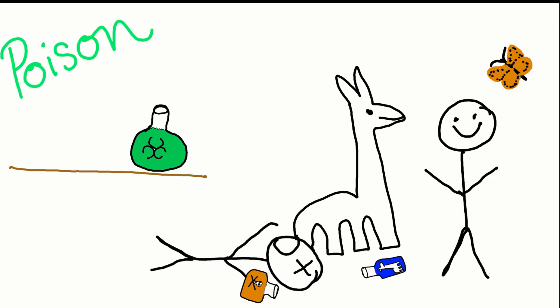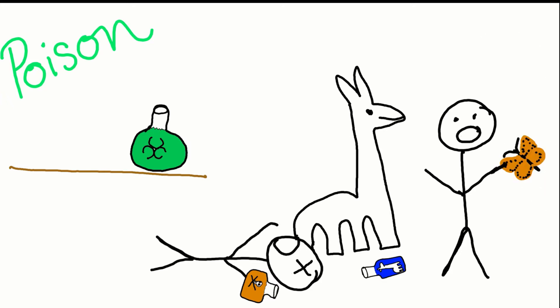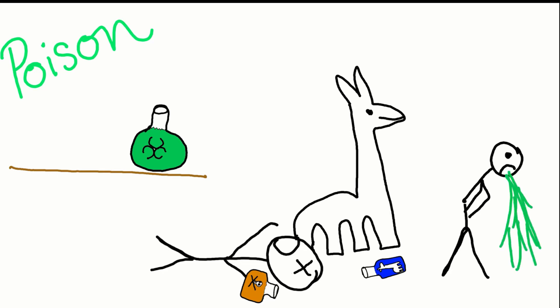A poisonous creature is only dangerous if you eat it or the poison crosses a membrane like touching the toxin and then getting it in your eye. Monarch butterflies are one example of a poisonous creature and a very good reason not to eat butterflies.